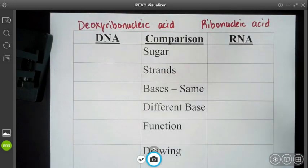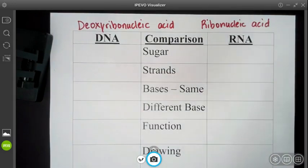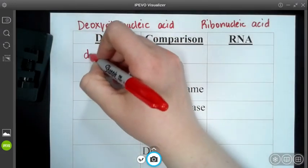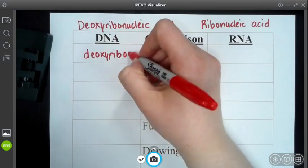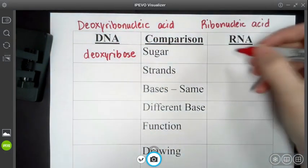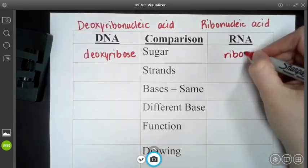So the sugar. DNA and RNA are actually named after the sugar that's found in them. DNA sugar is called deoxyribose, and RNA sugar is just ribose.